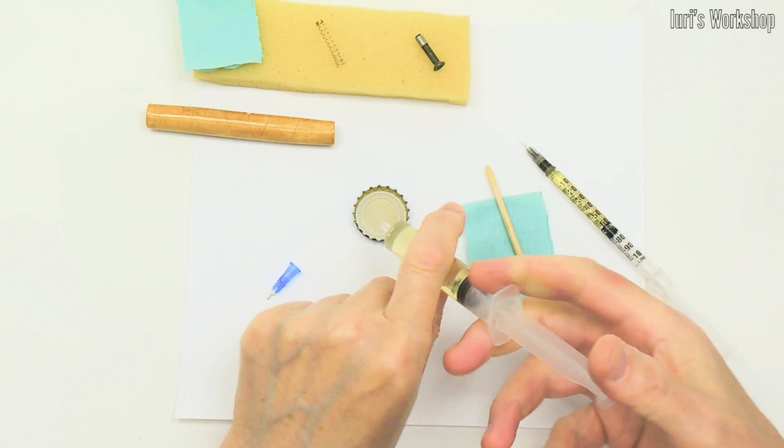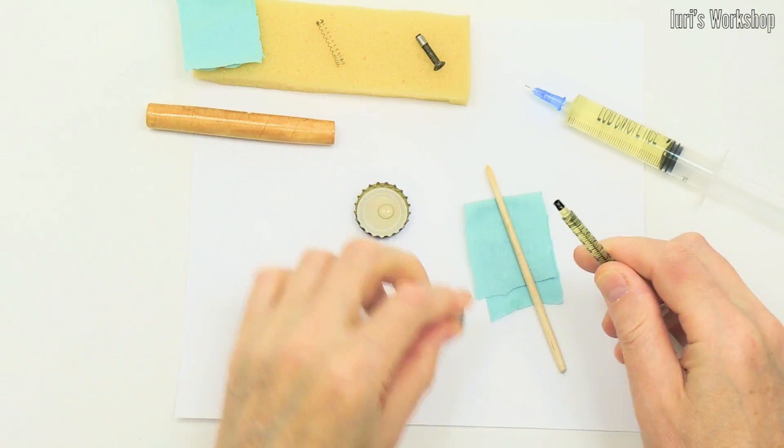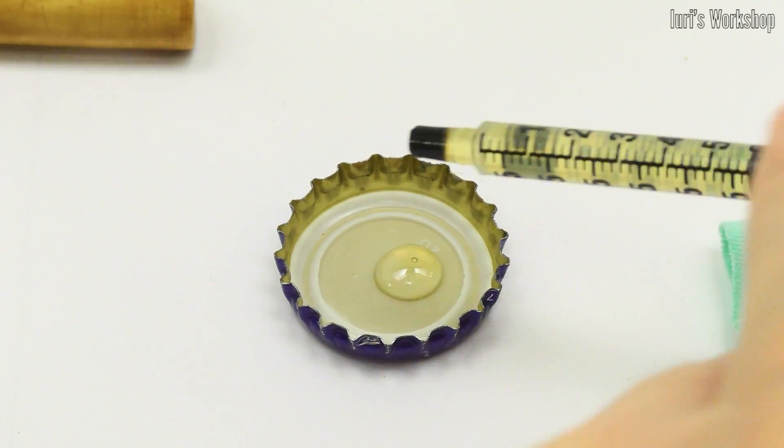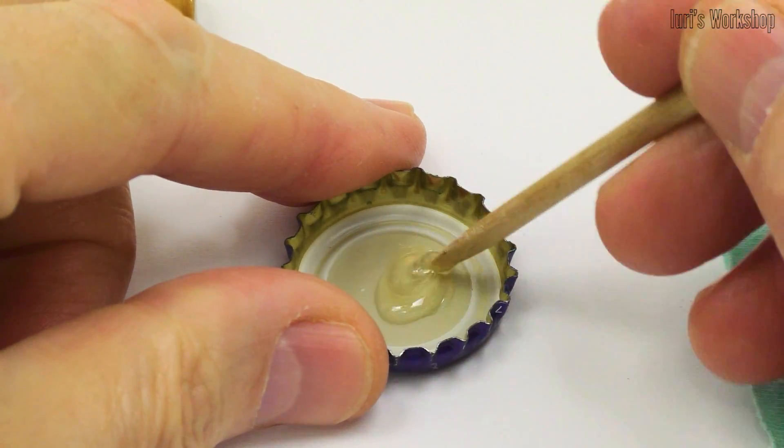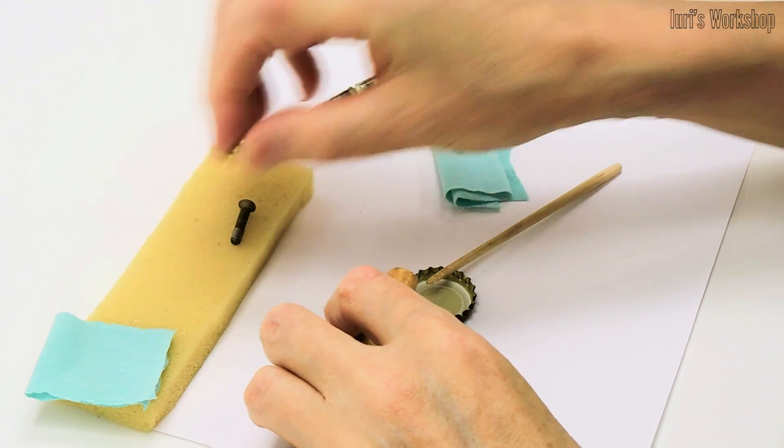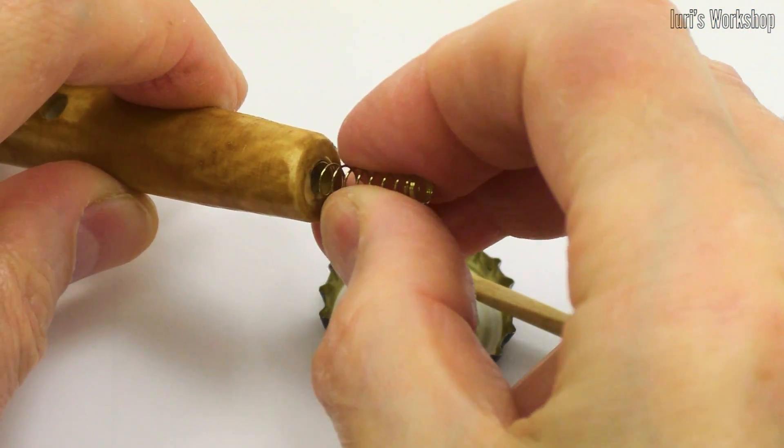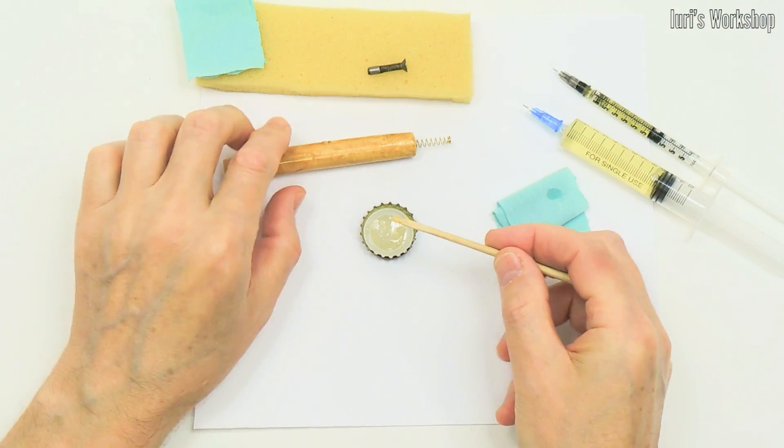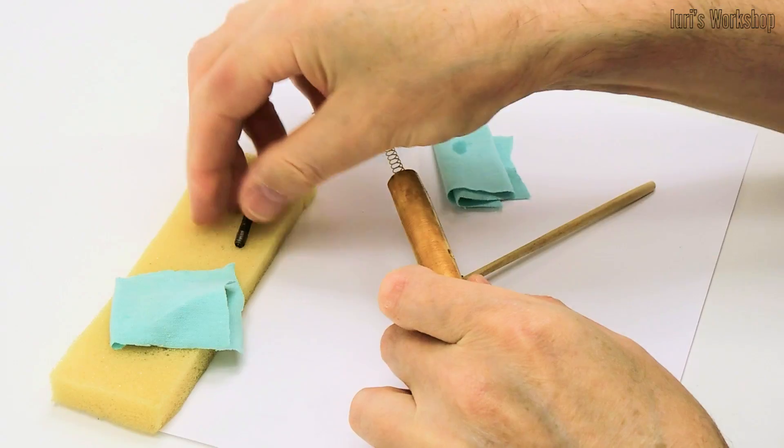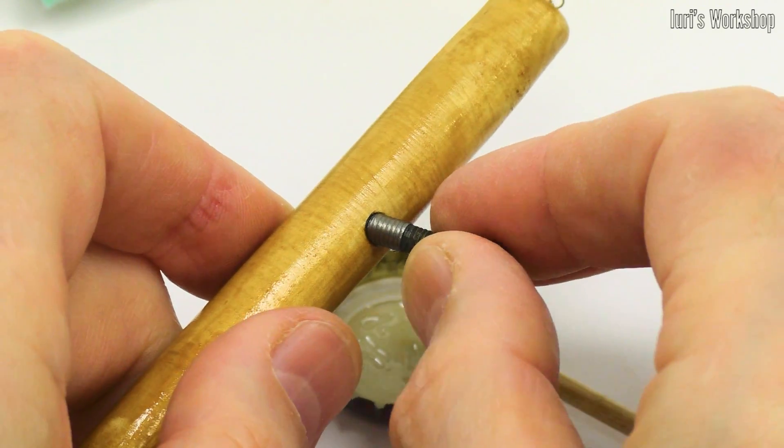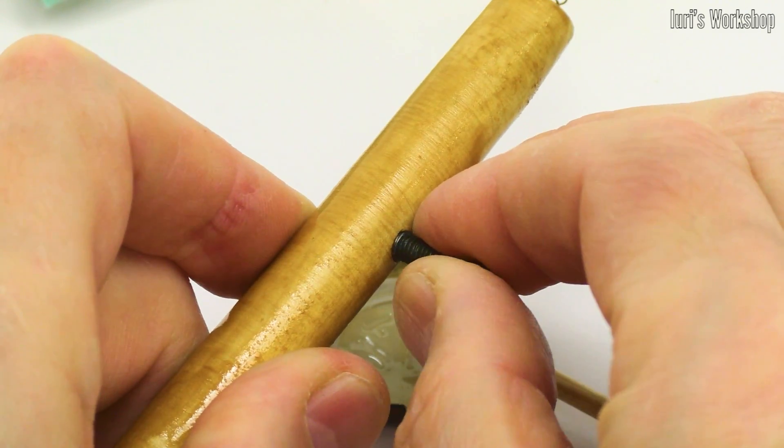I used epoxy glue to attach the next two pieces to the handle of the soldering iron. The first part is the spring from the ballpoint pen, which protects the soldering iron cable from breaking. The second part is a threaded bushing that fixes the power cable in the handle of the soldering iron.